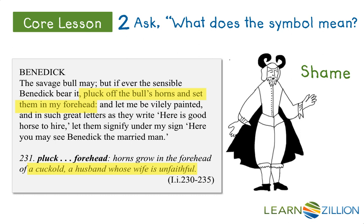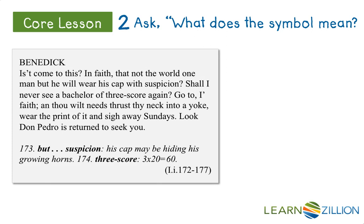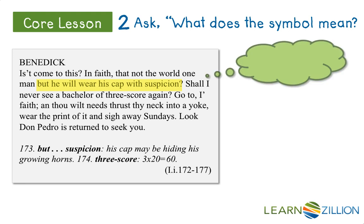As a result of this new insight into Shakespeare's word choice, we can add the word cuckold to our growing list of images that sport horns. When we reread our second passage, we are much better able to understand Benedict when he says, 'Is it come to this, in faith, that not the world one man, but he will wear his cap with suspicion?' The footnotes tell us that the cap may be hiding horns — the horns of a cuckold. Benedict is voicing his concern that there no longer be men who remain bachelors all their lives. He goes on to make fun of Claudio by telling him to go ahead and thrust his neck into a yoke — or in other words, to get married and sigh away Sundays, which seems to be a reference to being bored.